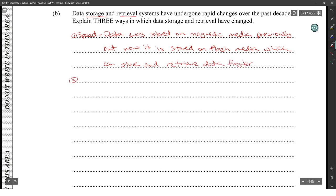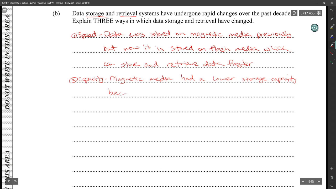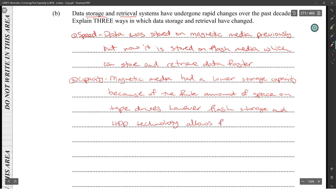Two: capacity. Magnetic media had a lower capacity because of the finite amount of space on tape drives. However, flash and hard drive technology allow for greater capacity now.